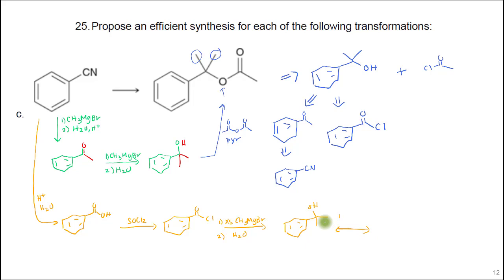Alternatively, you could use a Williamson ether-type synthesis: NaH, and then add an acid chloride. That would be another way to do that synthesis.